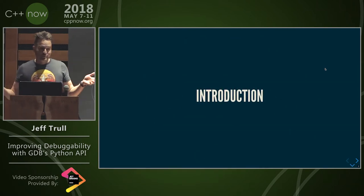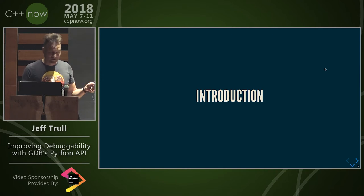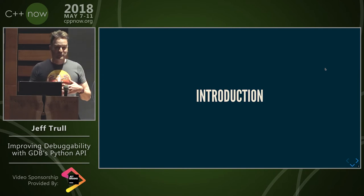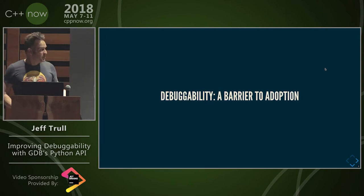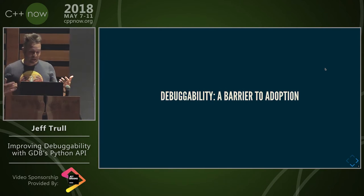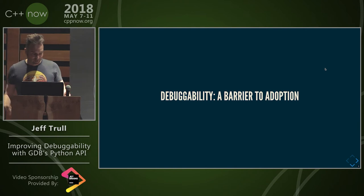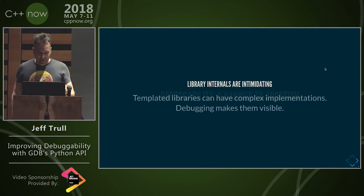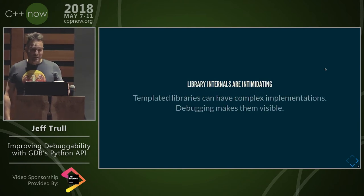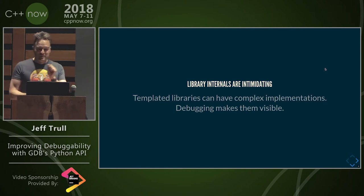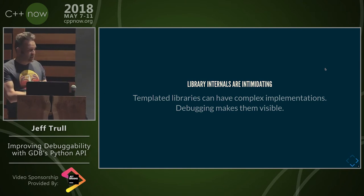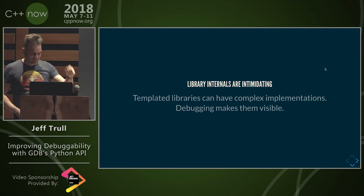We try to encourage people to use modern C++ libraries, which typically have a lot of template instantiations in them. If you come from a C background, you can sometimes have a bad time, because often you try to learn these things by how the library works and figure out your code through the debugger. Generally, because library internals get exposed in the debugger, templated libraries have complex implementations and you just kind of see all of it.